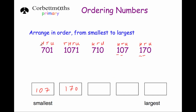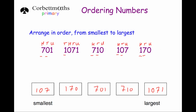Looking at the remaining numbers, 701 and 710 both have sevens in the hundreds column, so we check the tens: 701 has a zero and 710 has a one, so 701 is smaller than 710. The final order is 107, 170, 701, 710, and 1071 as the largest.